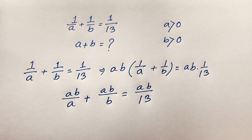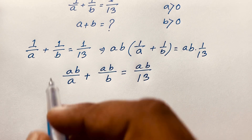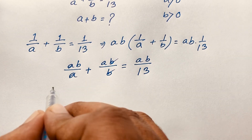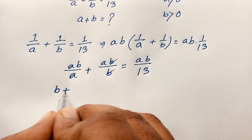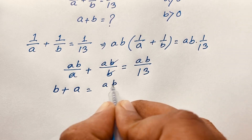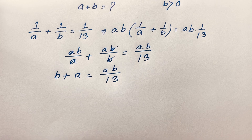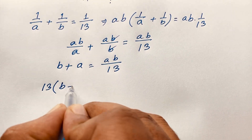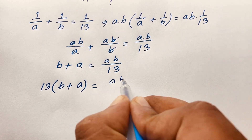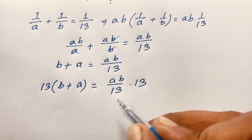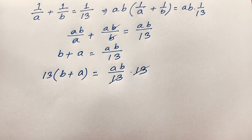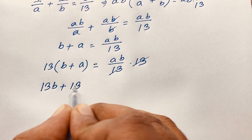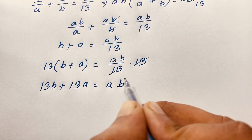In this expression, av over a — the a's cancel out — and av over v — the v's cancel out — so we find the equation: v plus a is equal to av over 13. Now I multiply both sides by 13, giving 13 times (v plus a) is equal to av.